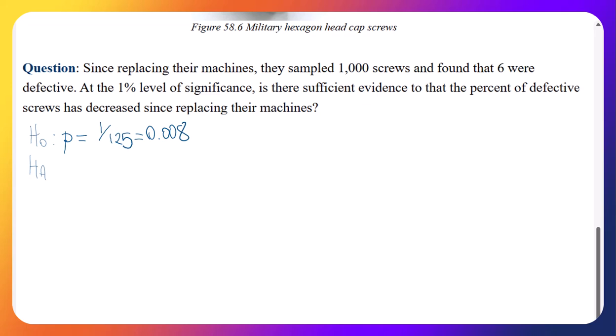The alternative will be that P is smaller than that rate, or if you will, it's smaller than 0.008.